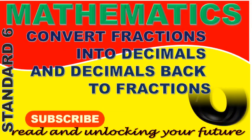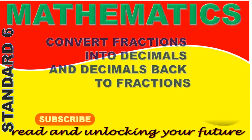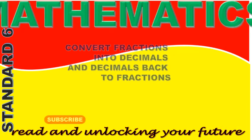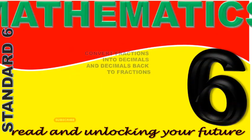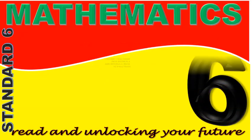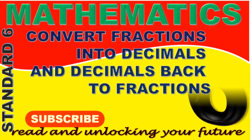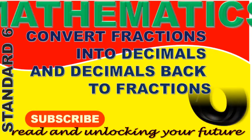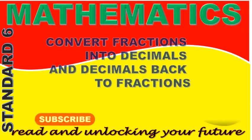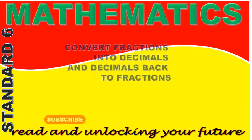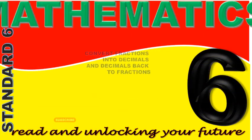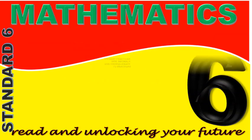Neema, how do we rename the fraction 13 out of 20 to have the denominator 100? We multiply the numerator and the denominator by 5: 13 multiplied by 5 out of 20 multiplied by 5 is equal to 65 out of 100. We multiply the numerator and the denominator by 5 to get 65 out of 100, then we write the fraction 65 out of 100 as a decimal: 0.65.